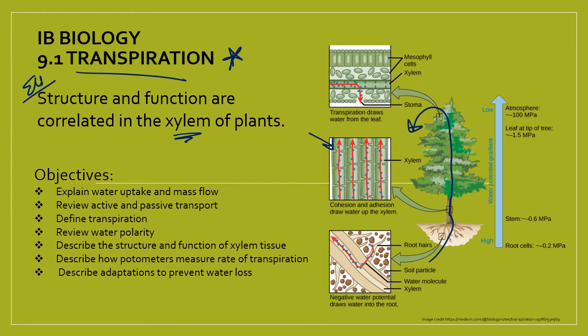Our objectives for today: we're going to explain water uptake and mass flow, review active and passive transport, define transpiration — because all of this depends on the polarity of water — review water's polarity, describe structure and function of xylem tissue, describe how potometers can measure the rate of transpiration, and then wrap up with a quick look at adaptations plants have to prevent too much water loss.